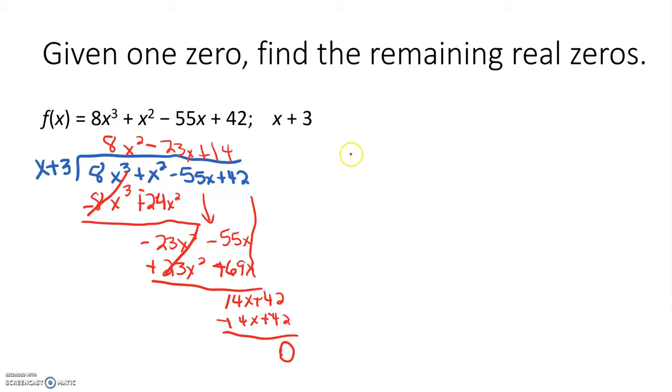And you should get a remainder of zero because we were told that this one was one of the zeros. So we know that we have (x + 3) times (8x² - 23x + 14). Now we need to see if we can either factor 8x² - 23x + 14, or we can use the quadratic formula.